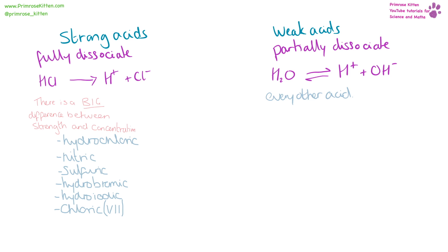There is a big difference between strength and concentration. Strong acids are going to fully dissociate into hydrogen ions and other ions. The strong acids are hydrochloric acid, nitric acid, sulfuric acid, hydrobromic acid, hydroiodic acid, and chloric acid. I would expect you to know that hydrochloric acid is HCl, nitric acid is HNO3, and sulfuric acid is H2SO4. The other ones we don't have to worry about too much. Everything else is a weak acid, which means it only partially dissociates.